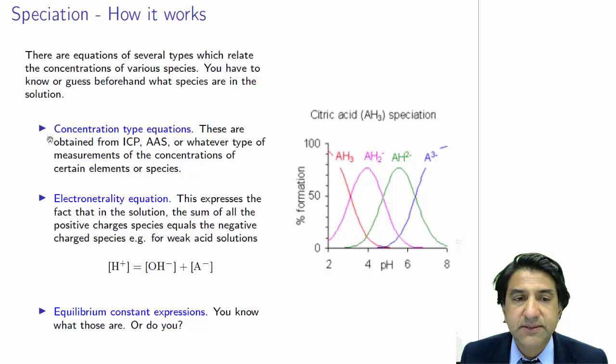And the other type of equation is concentration type equations. These are equations where we have measured the concentration of a certain species, say via ICP or AAS, or they could be concentration equations that we know because we have simply weighed out the amount of material and dissolved it into the solution. So we know the total concentration of the species in solution. Either we know it by weighing, or we know it by some physical process.